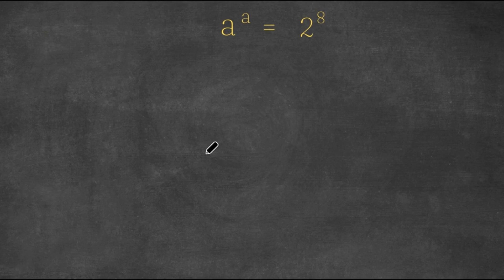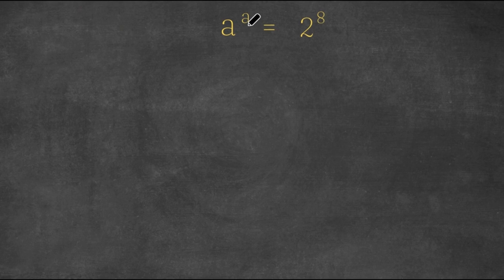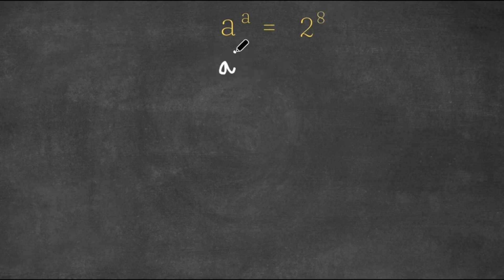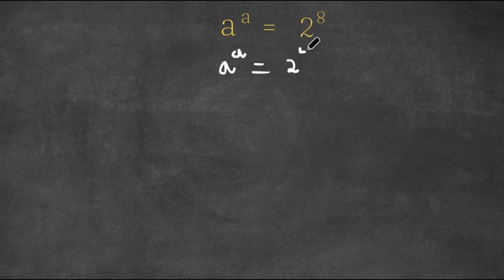Welcome back to Qlik Academics. In today's video, I'm going to be teaching you how to solve this exponential equation. We have a to the power of a is equal to 2 to the power of 8. Now 8 is the same thing as 4 times 2, so I'm going to write this as a to the power of a equals 2 to the power of 4 times 2.